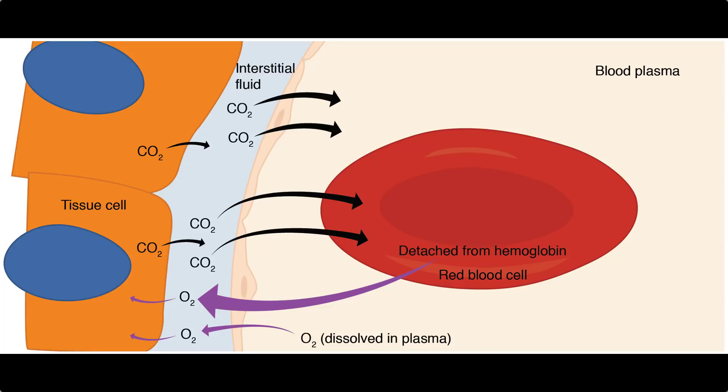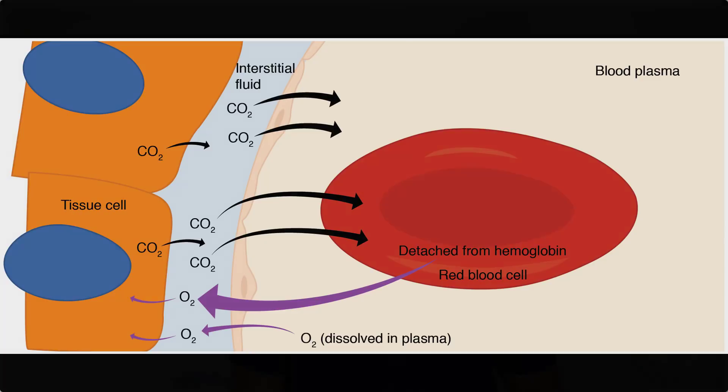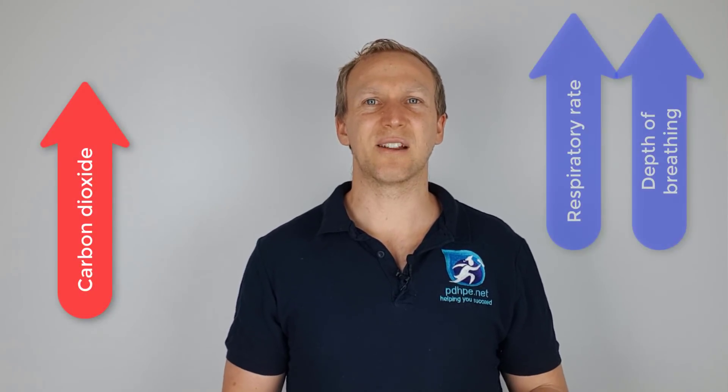Some carbon dioxide attaches to red blood cells, and the rest travels in your plasma, mostly converted to bicarbonate. During physical activity, muscles produce more carbon dioxide and demand more oxygen. In response, your respiratory rate and depth of breathing both increase. This increases air circulation, which increases carbon dioxide removal and oxygen absorption, allowing physical activity levels to be maintained because you have the oxygen needed for movement to continue.